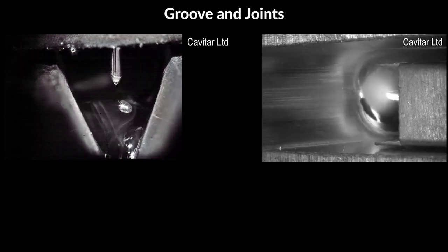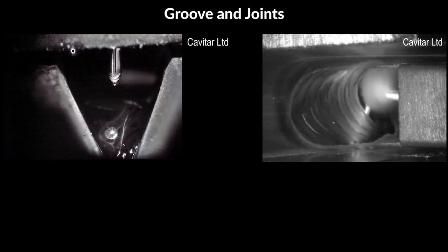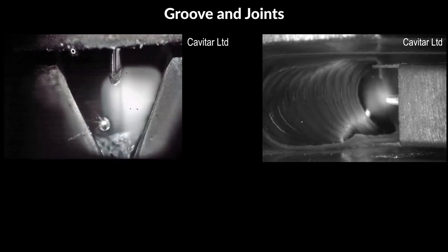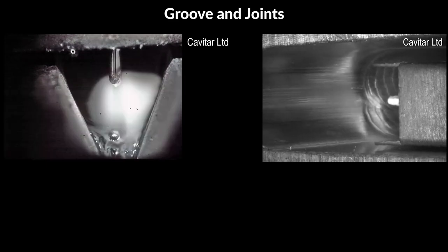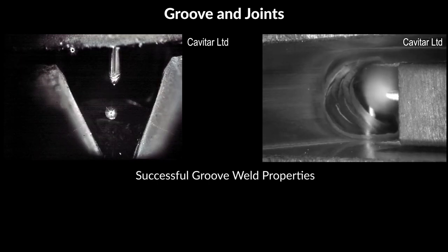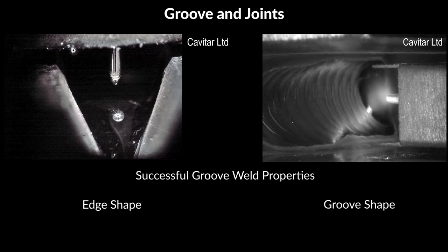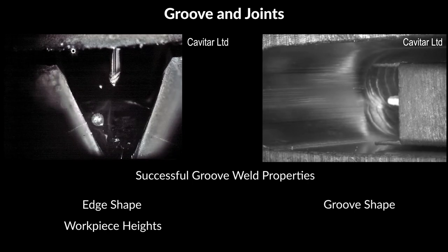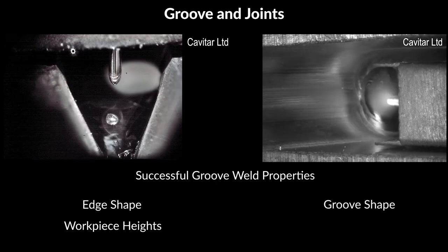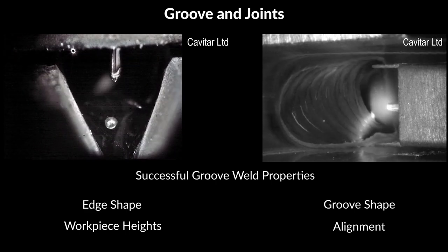1. Groove and Joint. Groove refers to the space between the workpieces to be joined together, or to a channel in the surface of a single workpiece. It is the space in which melted metal is directed and where the seam is formed. In groove welding, some preparation of the joint is usually necessary. Crucial properties include the shape of the workpiece edges, the shape of the groove, the relative height of the workpieces, and their alignment. All of these properties can be visualized and tracked throughout the process.